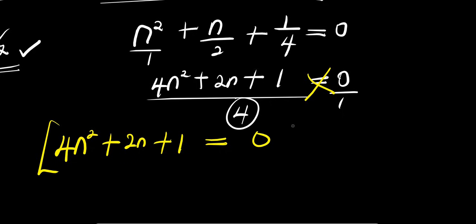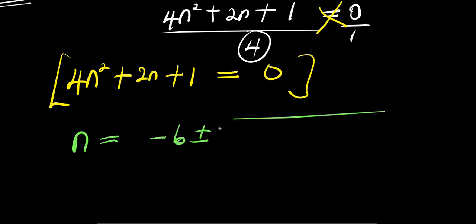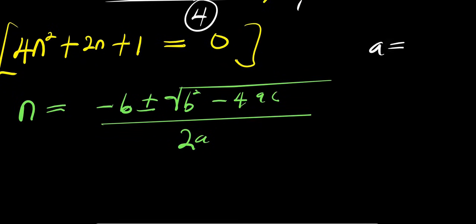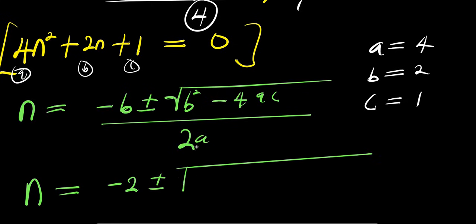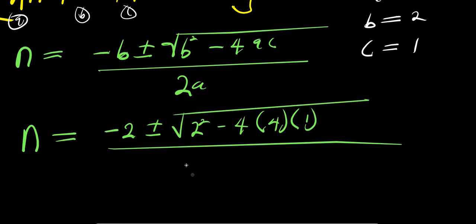So right now I need to solve this quadratic equation using the quadratic formula method. The formula with respect to n is: n equals negative b plus or minus square root of b squared minus 4ac, divided by 2a. From the equation 4n² + 2n + 1 = 0: a equals 4, b equals 2, c equals 1.